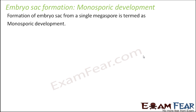Let us look at embryo sac formation. The female gametophyte is the embryo sac. So how will the embryo sac be formed? This formation of the embryo sac from a single megaspore is known as monospore development. Looking at the previous slide: surrounded by the nucellus cells there was just one megaspore. That one megaspore gradually formed the megaspore dyad, the dyad formed the megaspore tetrad. Out of those four megaspores, only one will form the female gametophyte — that one megaspore will form the embryo sac.